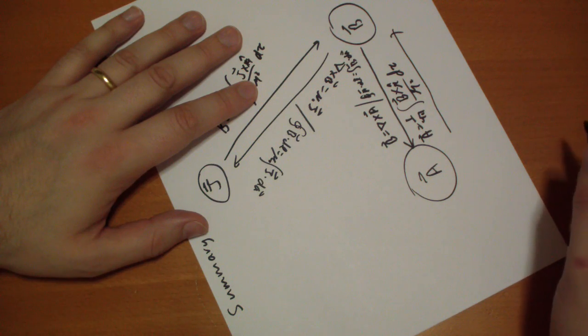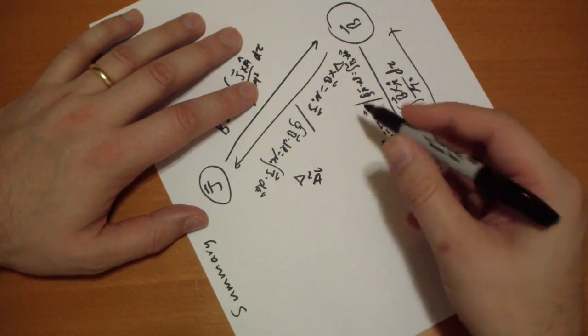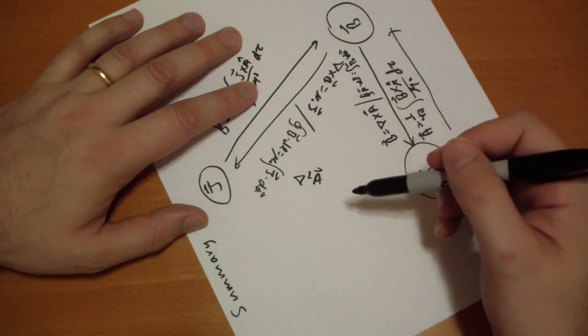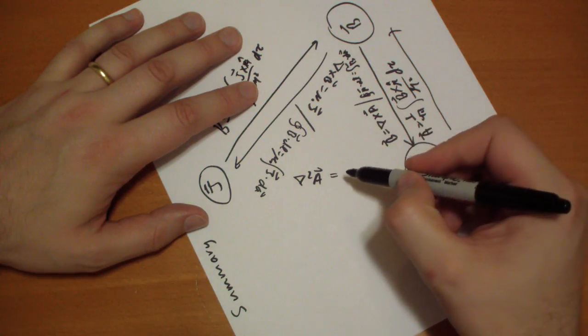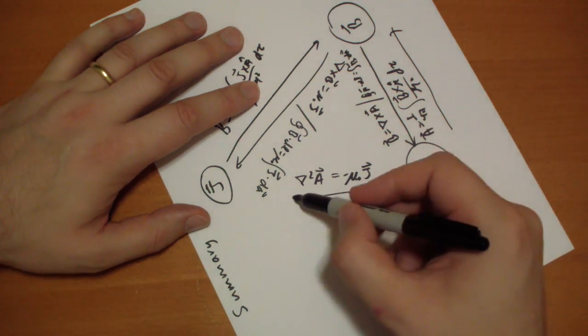Well, we have, if we have the A, we just take the Laplacian of the A vector. That's the Laplacian of the X component, Laplacian of the Y component, Laplacian of the K component. And that will give us negative mu naught of the J vector. So that's to go that way.